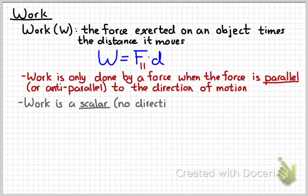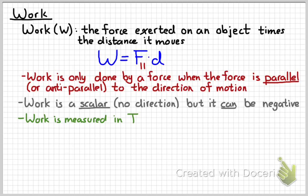Work is a scalar quantity, which means it doesn't have a direction, but as we're going to see here in a few minutes, it can be negative. We measure work with the unit joules, and the definition of a joule is a newton times a meter.